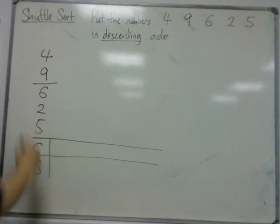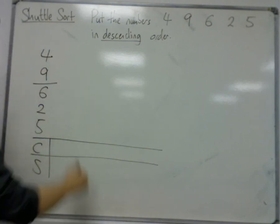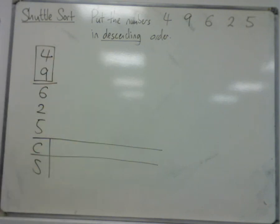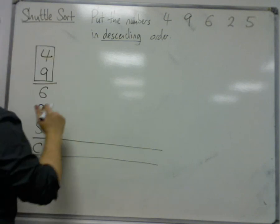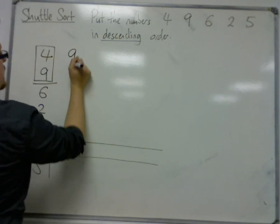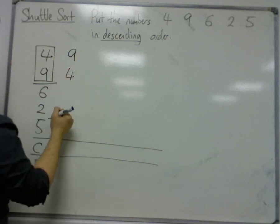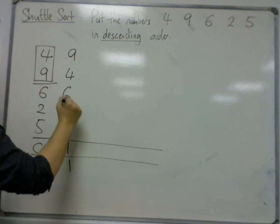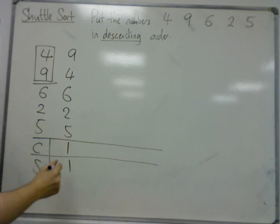We draw a line under the first two numbers and compare 4 and 9 first. Because we're putting them in descending order, these are not in the correct order. I want the largest number at the top, so the 9 must go first, then the 4. We've made one comparison and one swap already. The first two were not in the correct order.